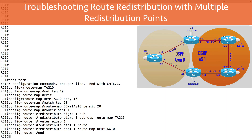What this does is deny any routes with a tag of 10 from being redistributed from OSPF into EIGRP. I did this on one of my redistribution points, RD1. To complete the configuration, I would need to do the same thing on router RD2, my other redistribution point. And that's a look at a few different ways we can troubleshoot a routing loop that might occur when doing mutual route redistribution between different routing domains with more than one redistribution point.